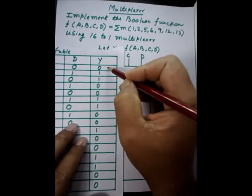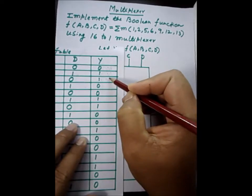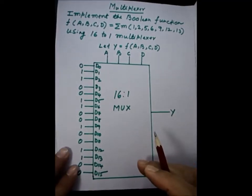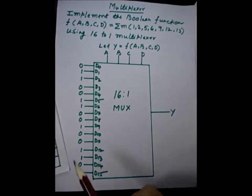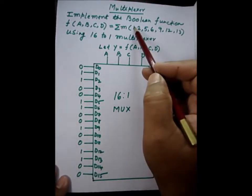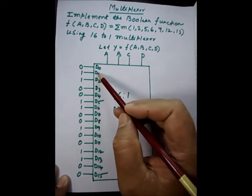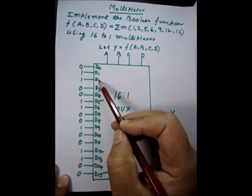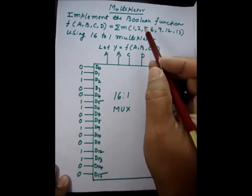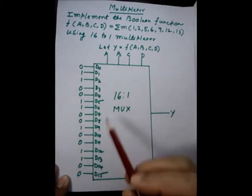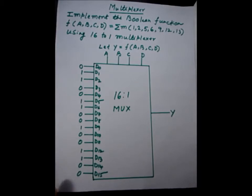It is assigned serially — D0, D1, D2, all the way up to D15 — and this way we get the desired output. Without the truth table also, you can do this directly. You can see M1 — the subscript is 1 — put D1=1. Then M2 — subscript 2 — put D2=1. M5 — put D5=1. M6 — put D6=1. M9 — put D9=1. M12 — put D12=1. M13 — put D13=1. Things can be done very fast this way.